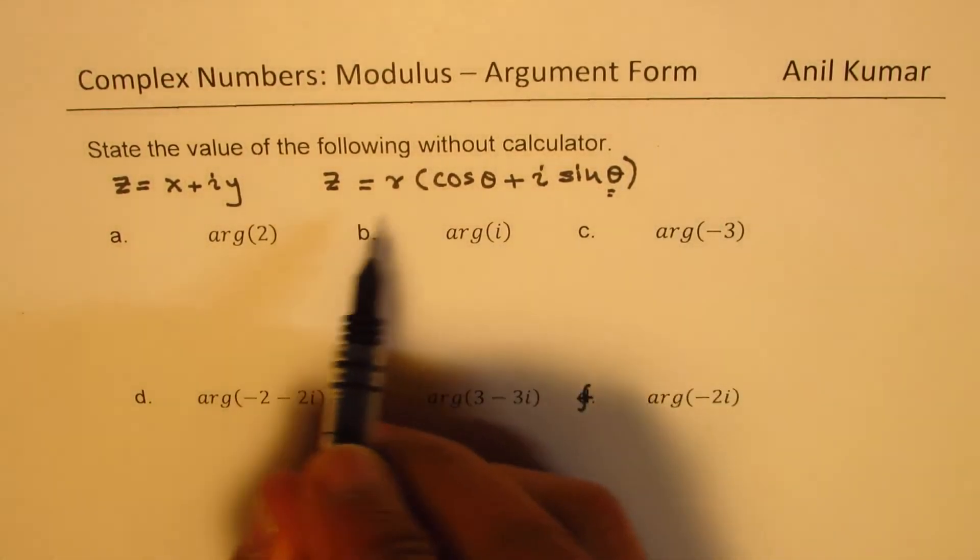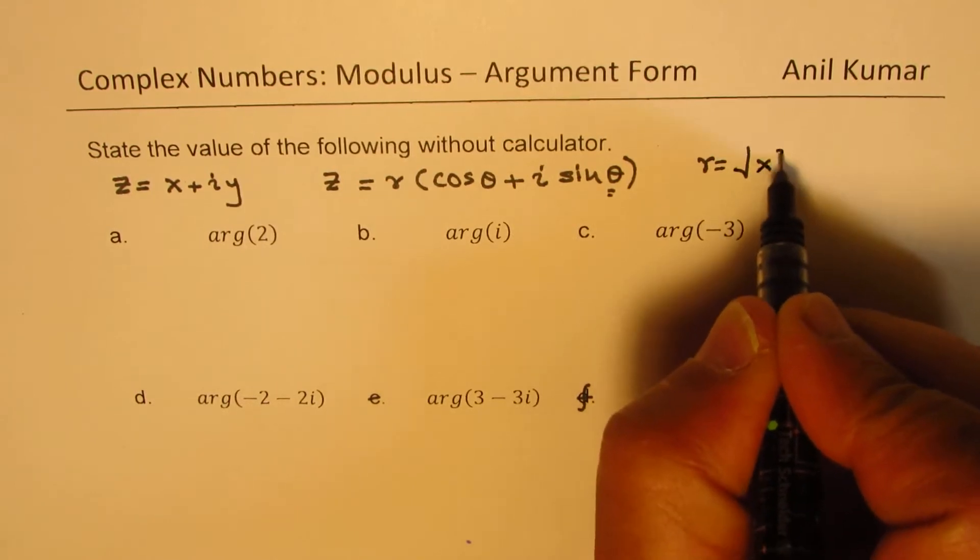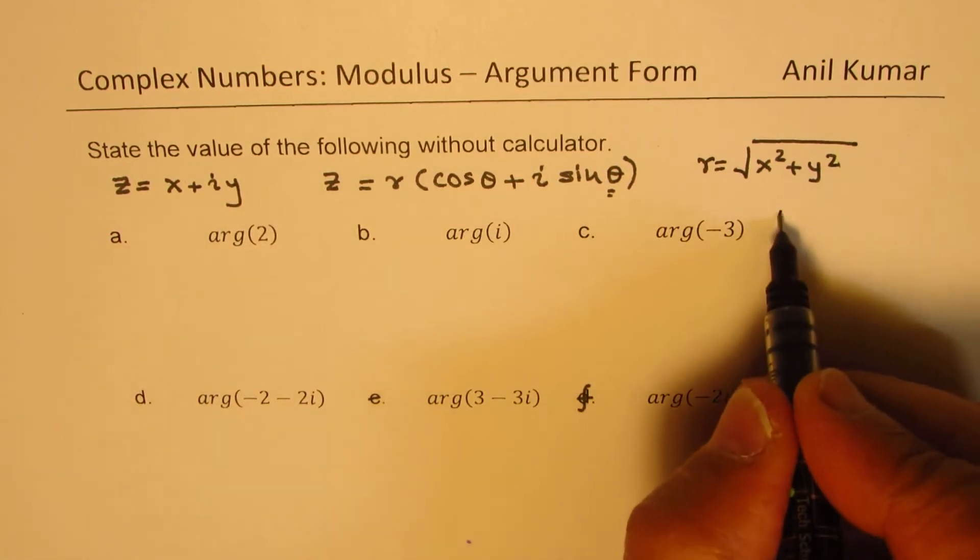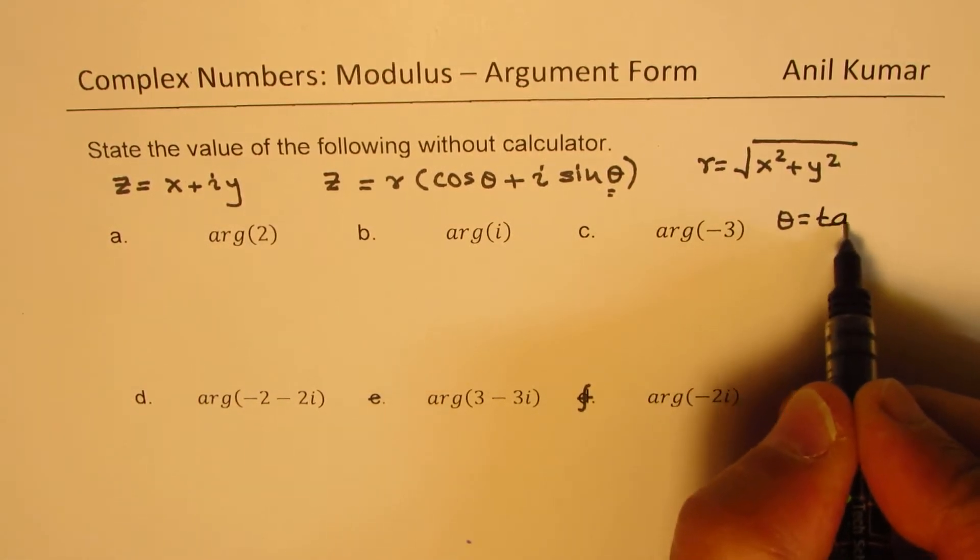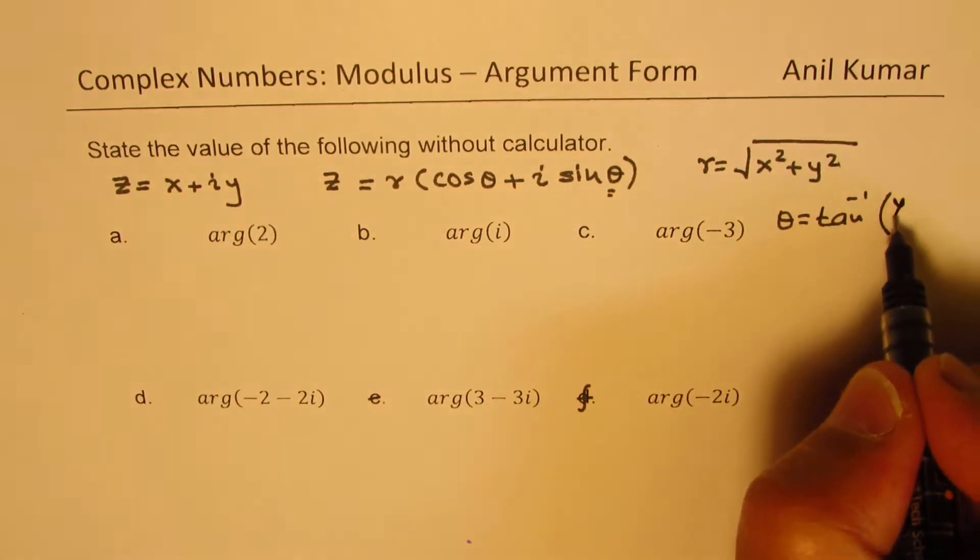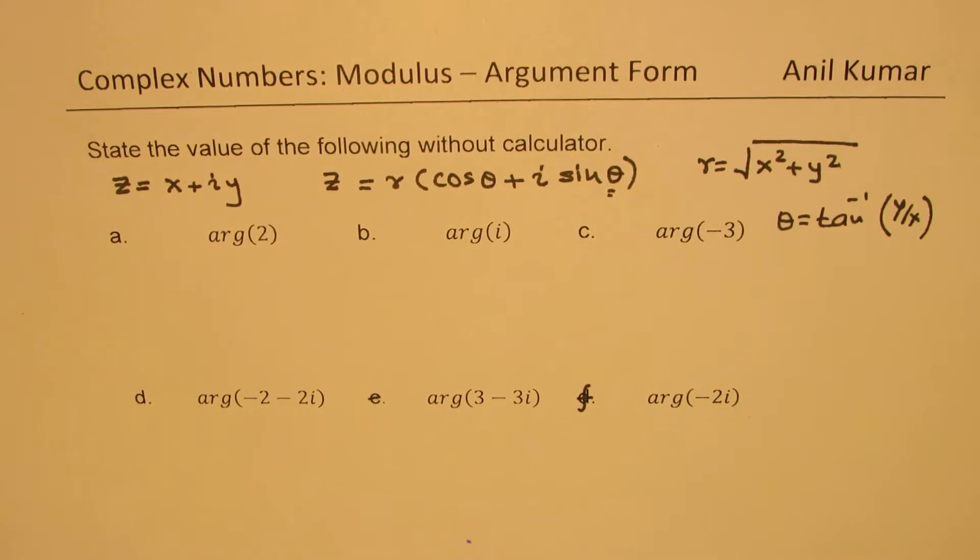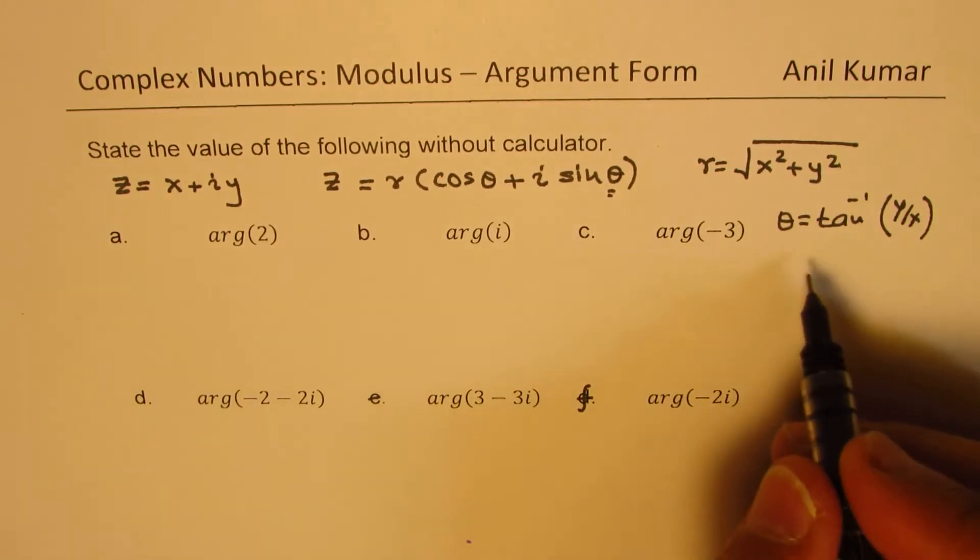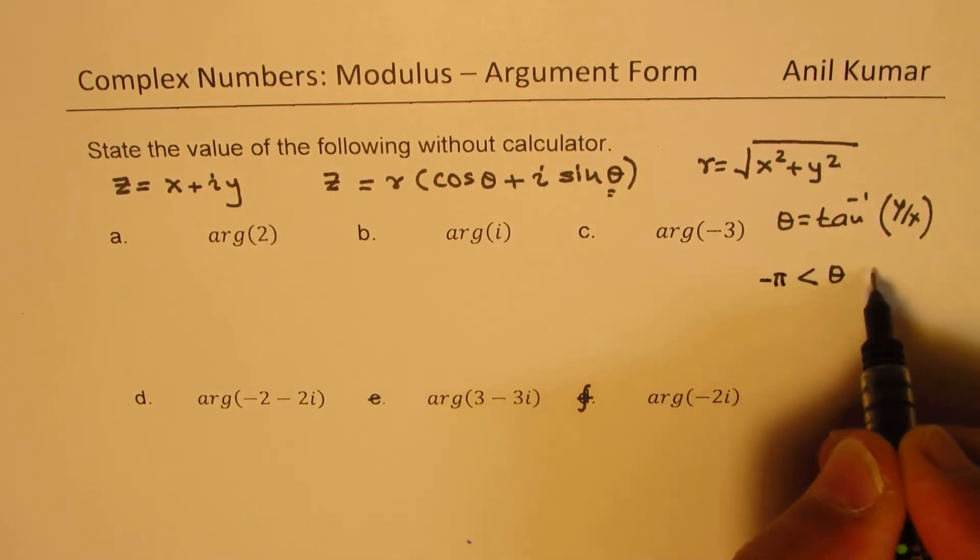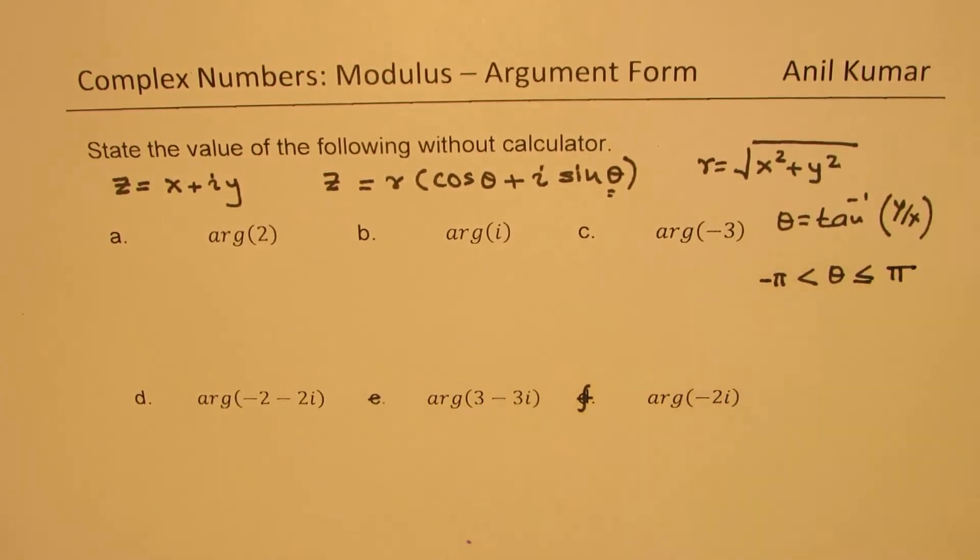Now r is basically equals to square root of x squared plus y squared, and theta is tan inverse of y over x. But that really doesn't give you the correct value all the time. Now the value of theta is basically from minus pi to plus pi.